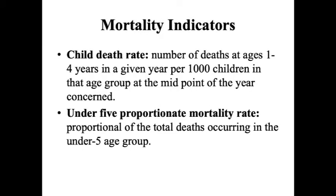Child death rate is the number of deaths at ages 1 to 4 years in a given year per 1000 children in that age group at the midpoint of the year concerned. For example, for 2018, we look at deaths from 1 to 4 years of age per 1000 children in the total population of 1 to 4 years at 1st July 2018. Under-5 proportional mortality rate is the proportion of total deaths occurring in the under-5 age group — out of 100 total deaths including adults, how many are less than 5 years old.